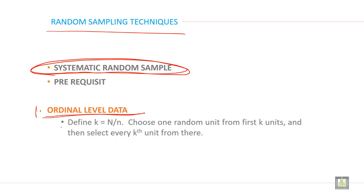Define K. K is the gap. And how can you define K? K equals capital N over small n. Capital N is population and small n is sample. So how many units do you want?